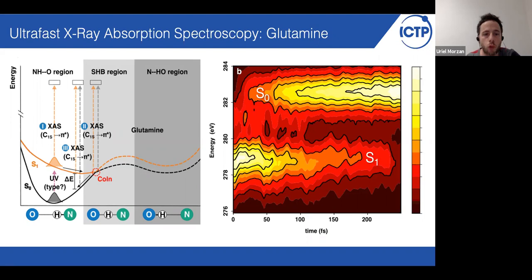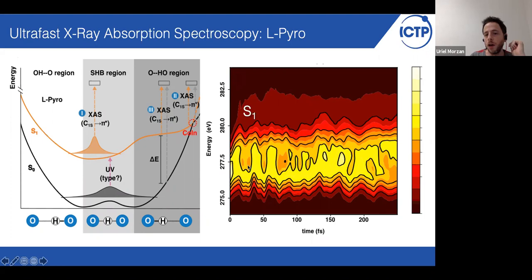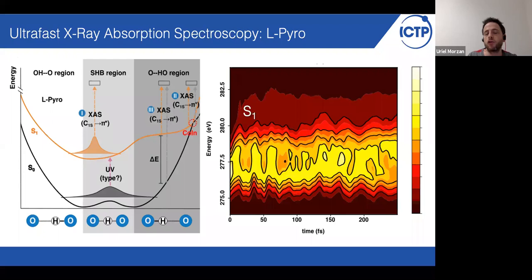This allows us to probe in real time the passage of the system through the conical intersection. What happens in the case of L-pyro — the system that contains a strong hydrogen bond, the system that fluoresces — the conical intersection is much more difficult to reach; it's higher up in energy. So it takes much more time for the system to reach the conical intersection and to decay non-radiatively. As a consequence, what we see in the spectrum is just one single band. This technique allows us to have a fingerprint associated with the presence of strong hydrogen bonds, both statically and dynamically — it would allow us to study the transient presence of strong hydrogen bonds.